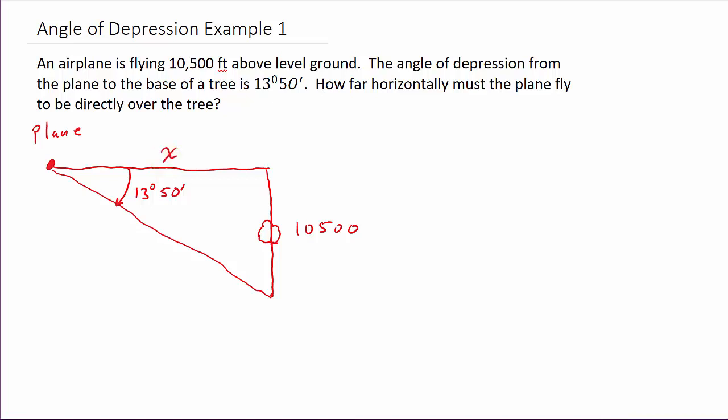So let's see what we've got. This is a right angle because we're directly over the tree. So that'll make a 90 degree angle. We've got the angle here. This is the side opposite. This is the side adjacent. And this is your hypotenuse. So we've got opposite and adjacent.